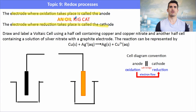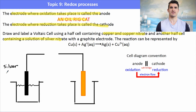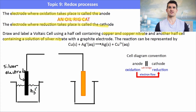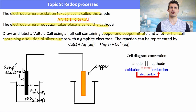Here we're asked to label a galvanic cell containing a silver nitrate solution with a graphite electrode, along with a copper/Cu²⁺ half cell. The given reaction is: Cu(s) + Ag⁺ → Ag(s) + Cu²⁺. In the silver half cell we have a graphite electrode with silver ions and nitrate ions in solution. In the copper half cell we have a copper electrode with Cu²⁺ ions.